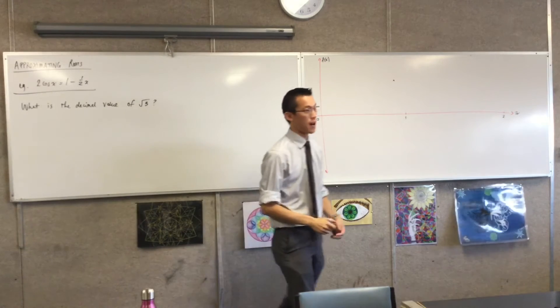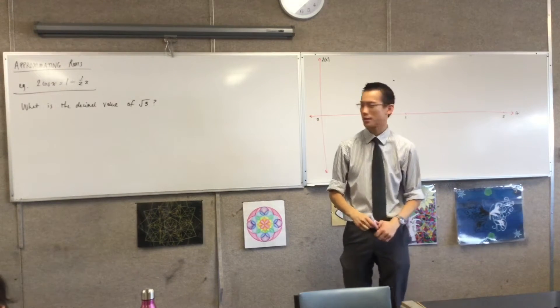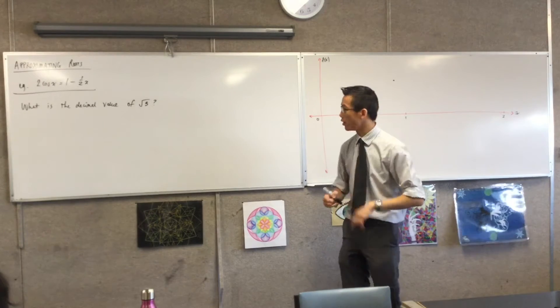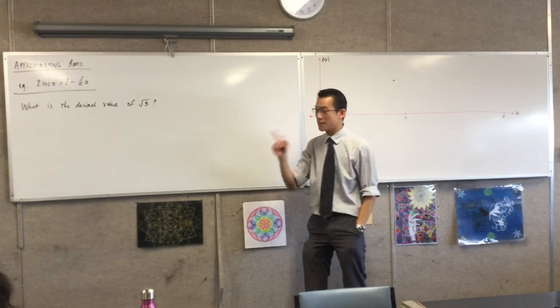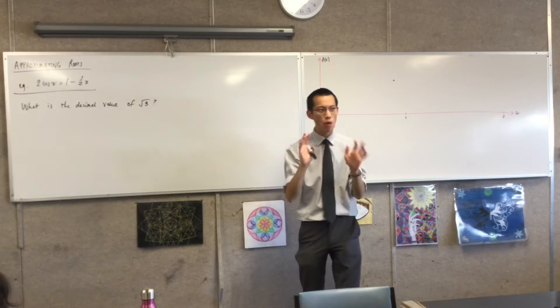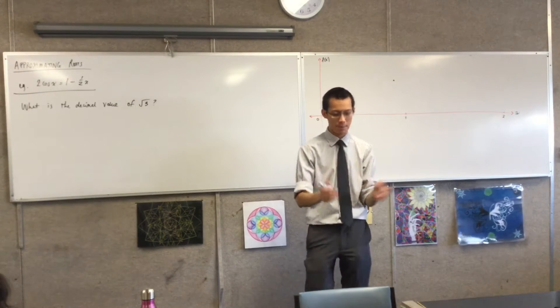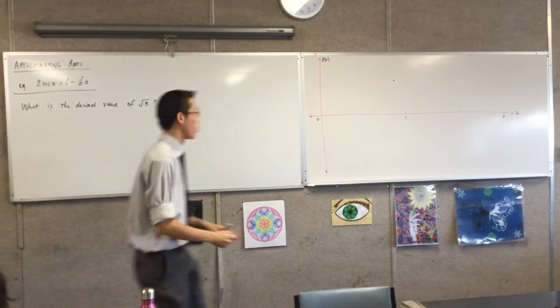We are going to find the decimal value for root three. At least we're going to get pretty close. Now, I think we all know that root three as a number has to be somewhere between, well, if I can pick some whole numbers, whole numbers that I know, okay?